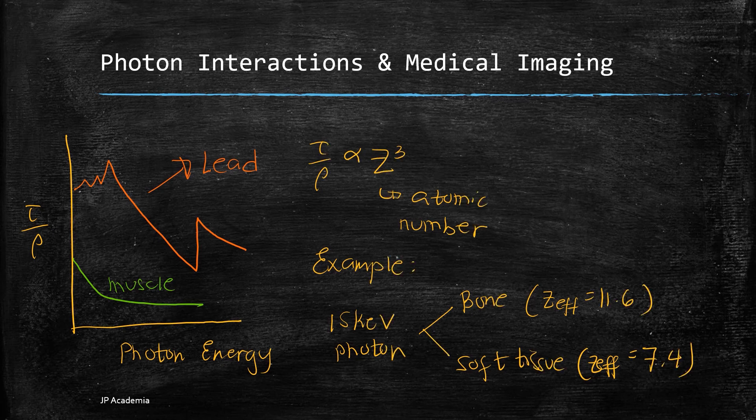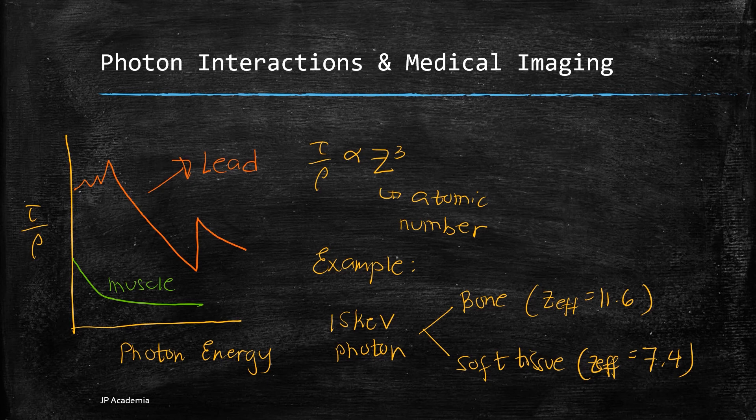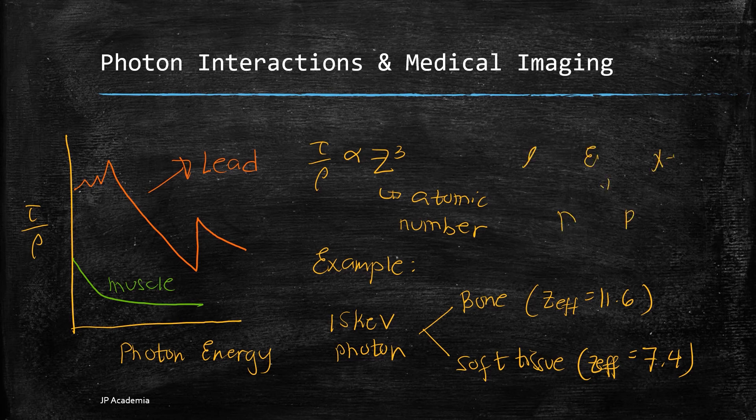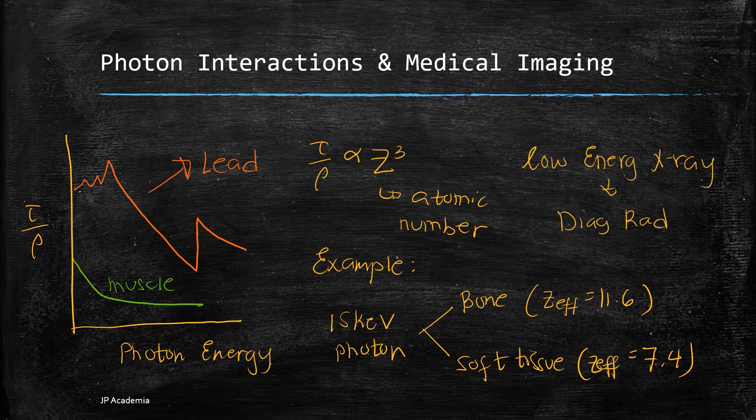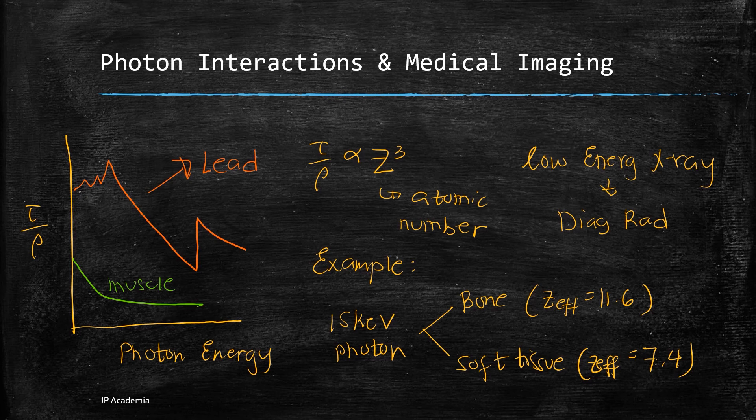Thus, for a photon of, let's say, 15 kilo electron volts, it will be absorbed through photoelectric interaction more by bones than soft tissue with the given Z-effective values. Reason also why low-energy x-rays are useful in imaging is because it produces contrasts based on varying values of Z and densities.